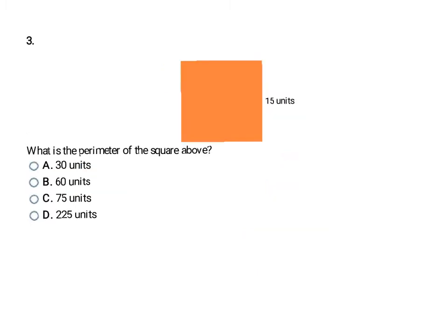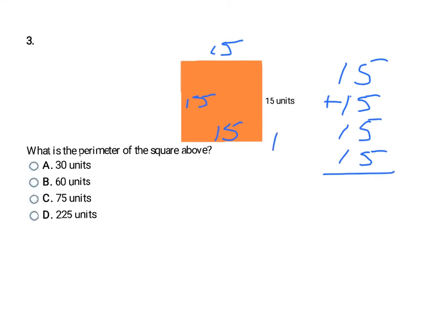Next we find the perimeter of a square. All four sides of a square are equal, so if one side is 15 then all four sides are 15. You can add 15 four times or multiply 15 times 4. Either way, the perimeter is 60 units — choice B.